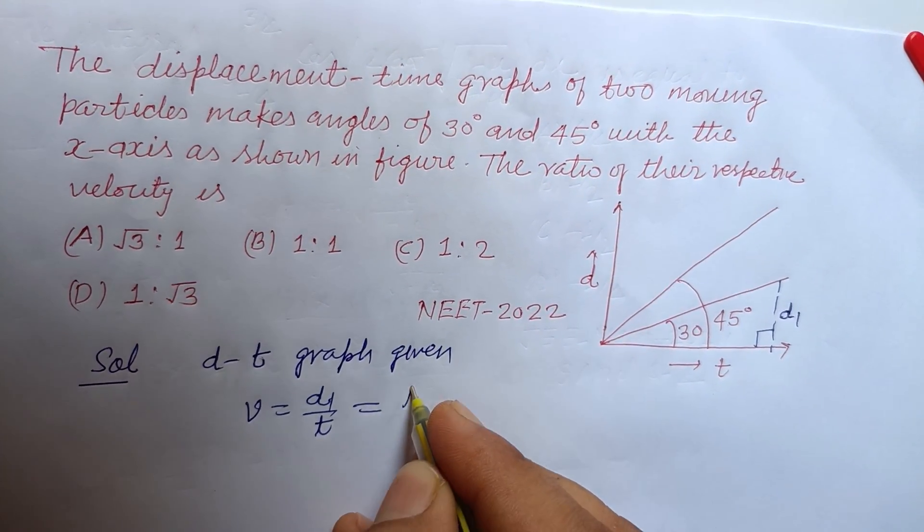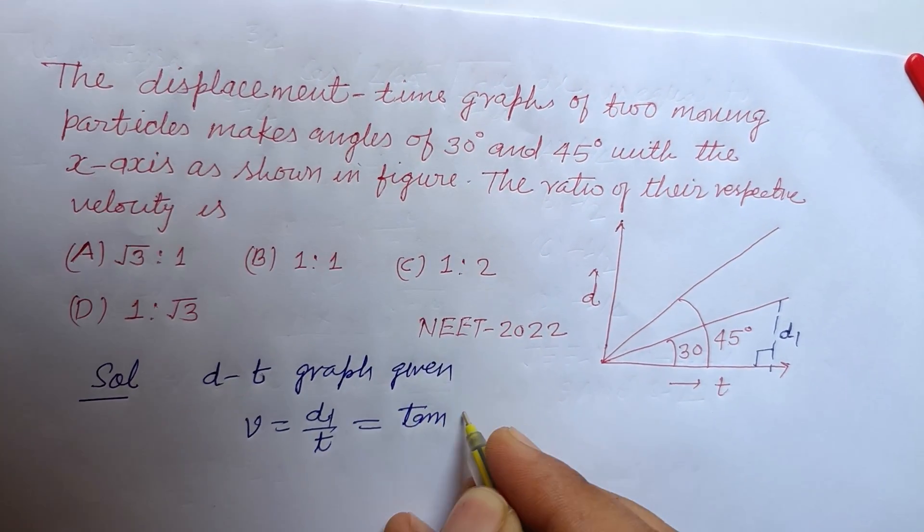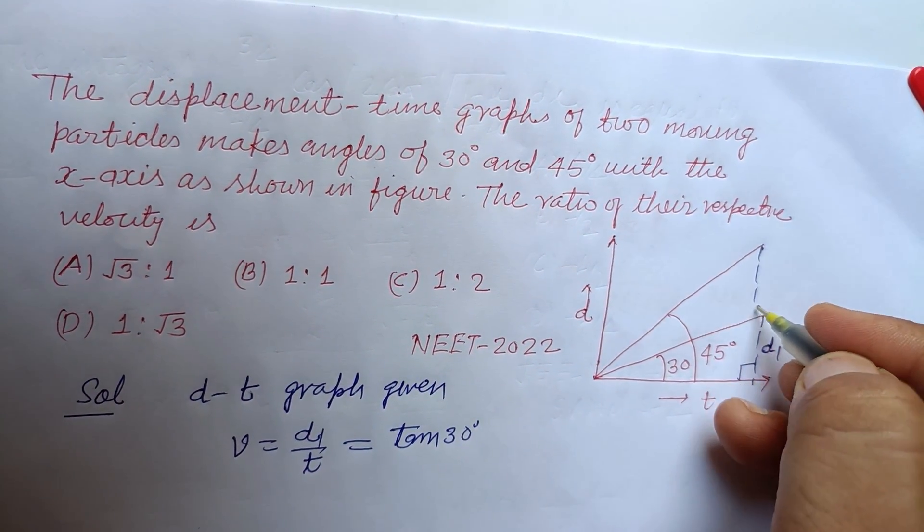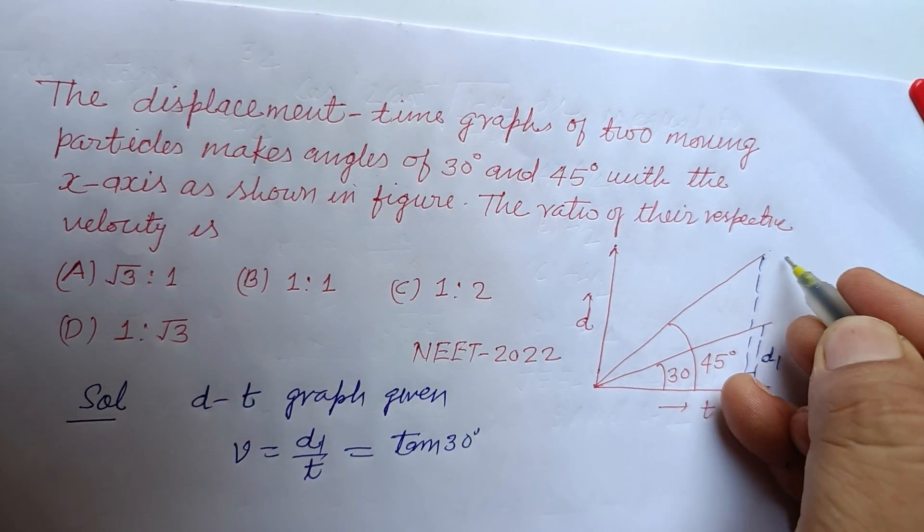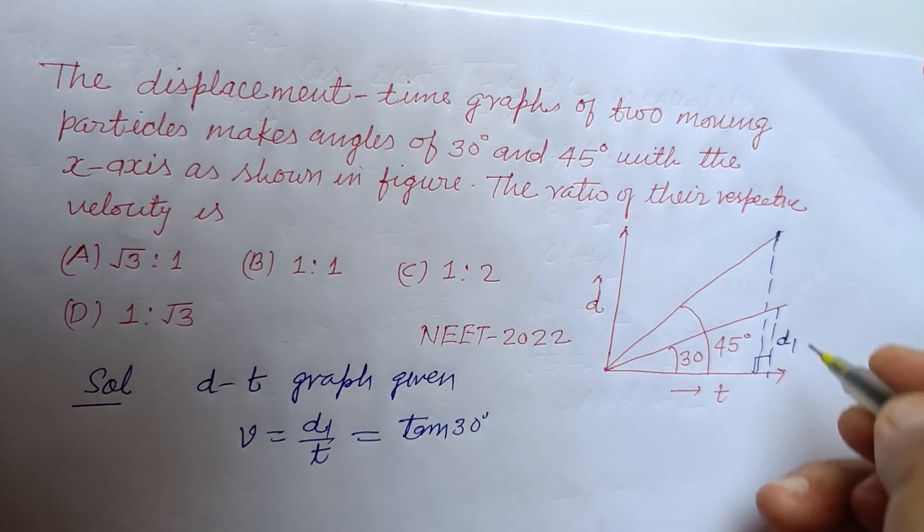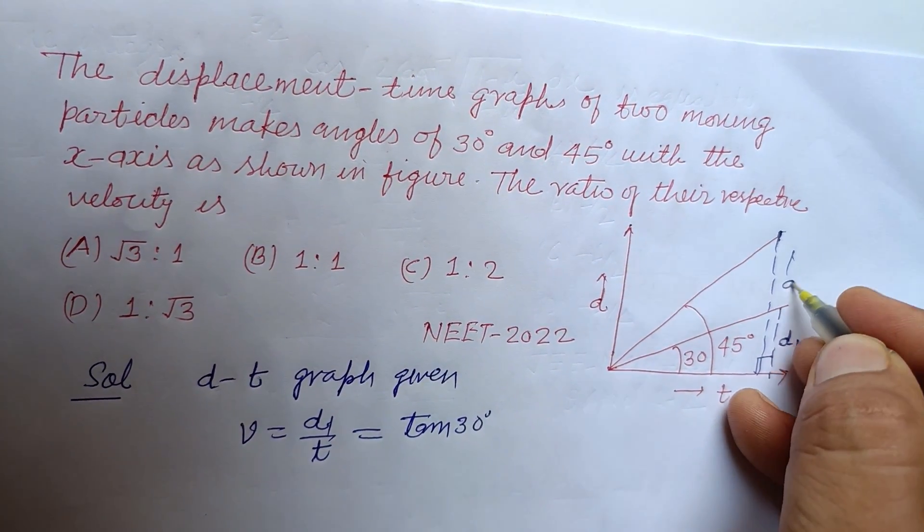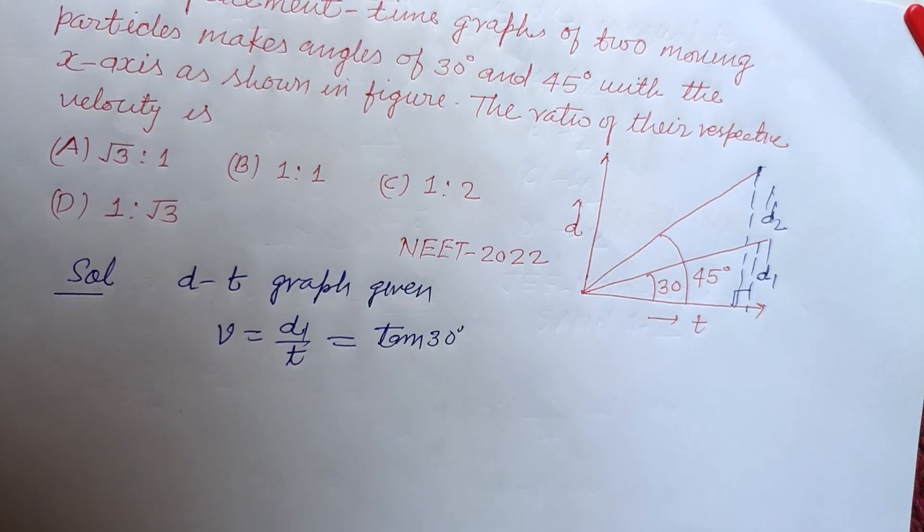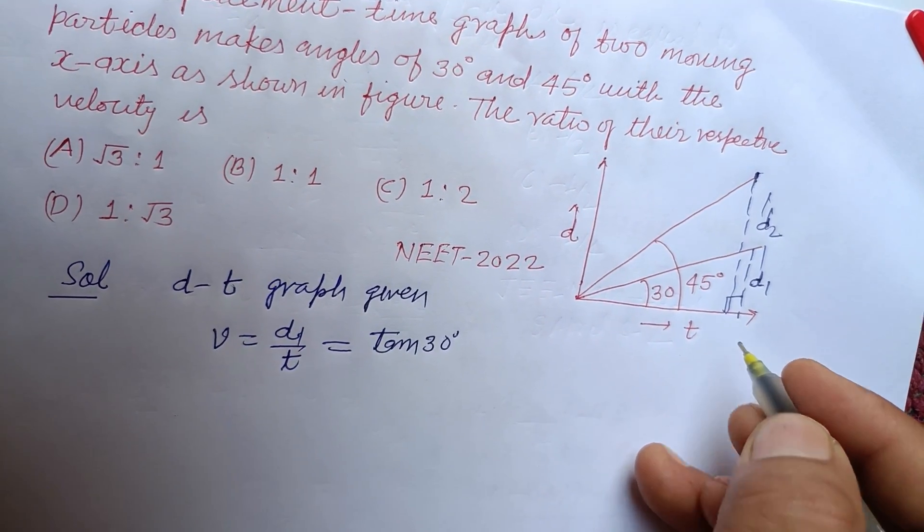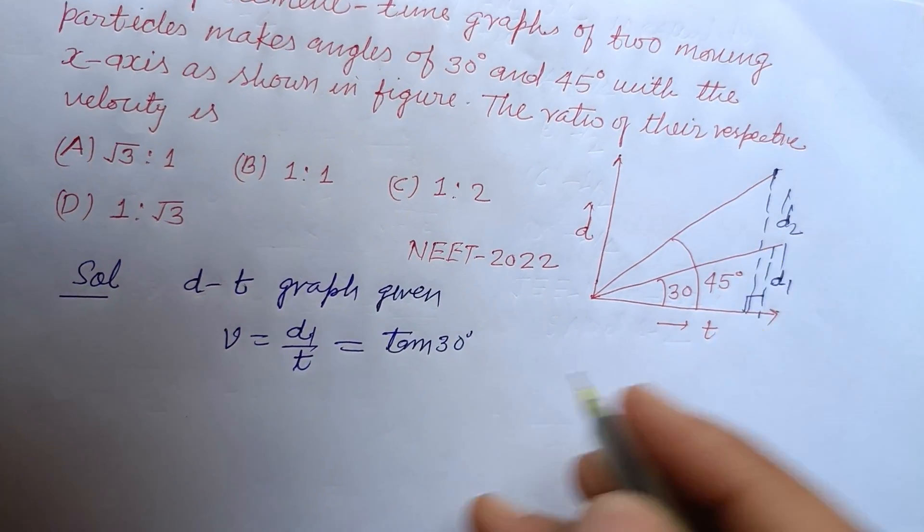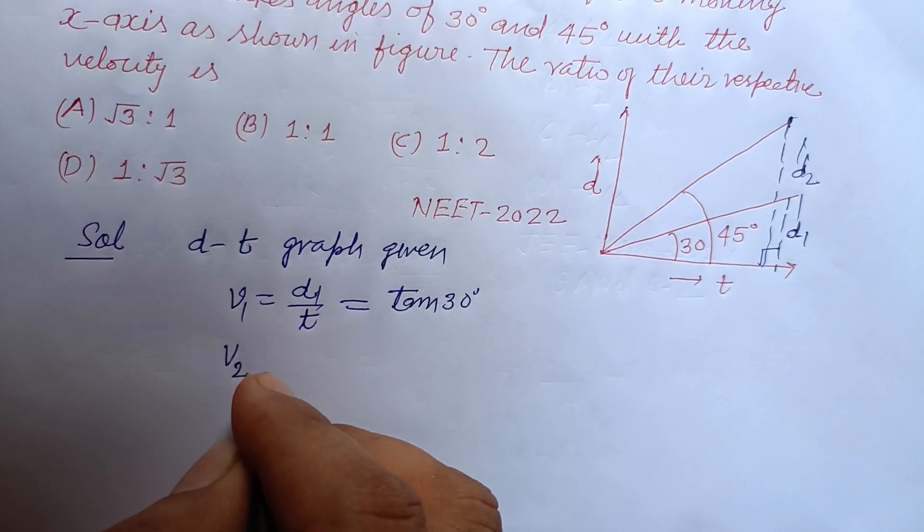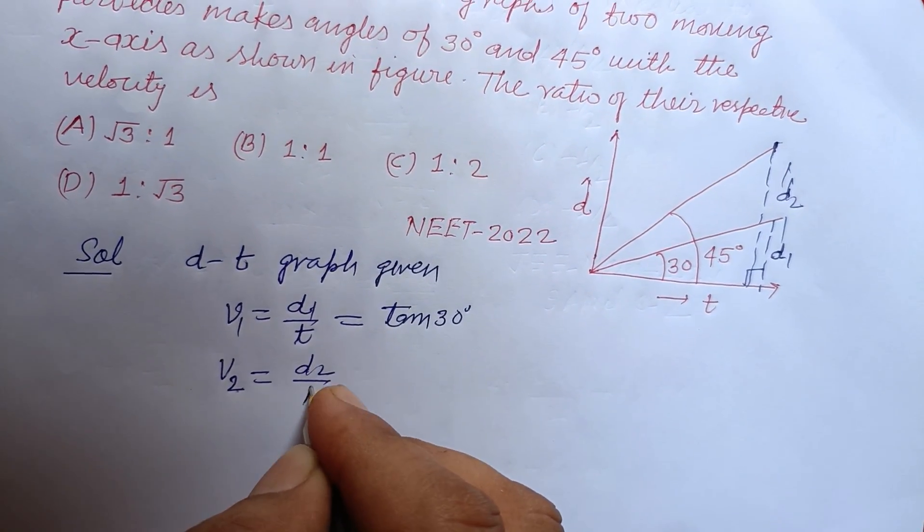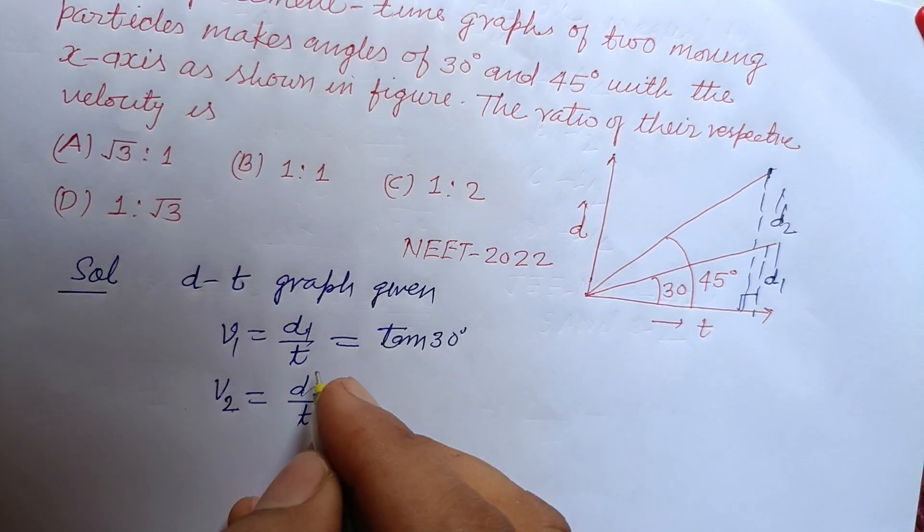And displacement, this is the perpendicular for this right angle triangle and this is base, so this is tan. And for the other particle, we have this is d2, okay, this is d2.